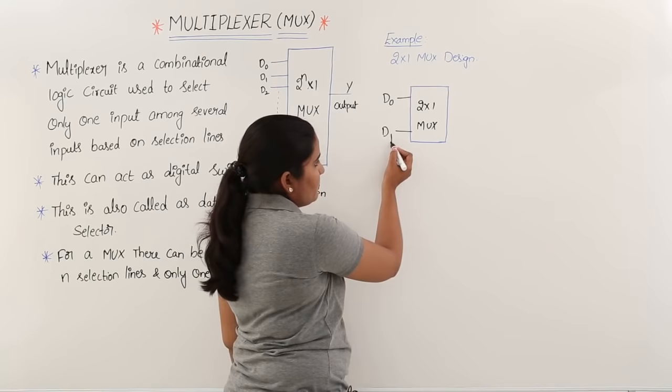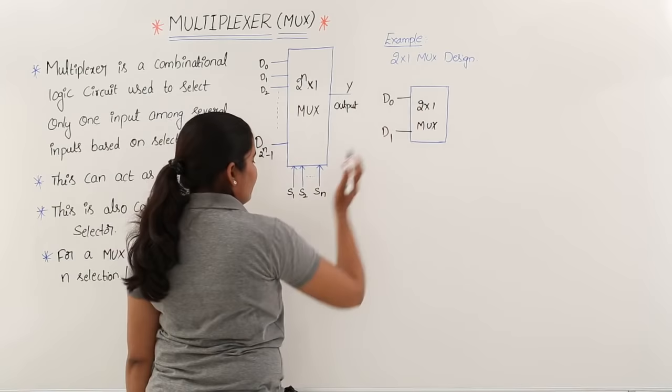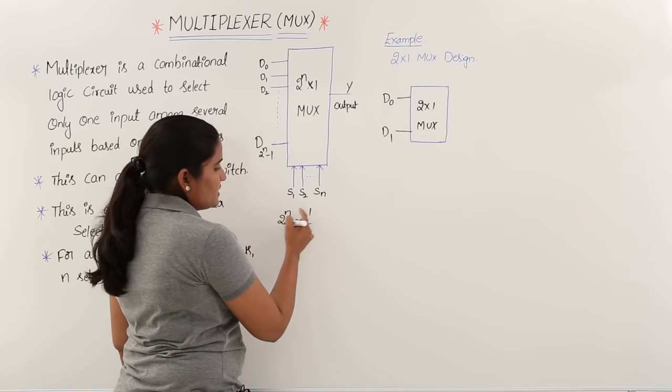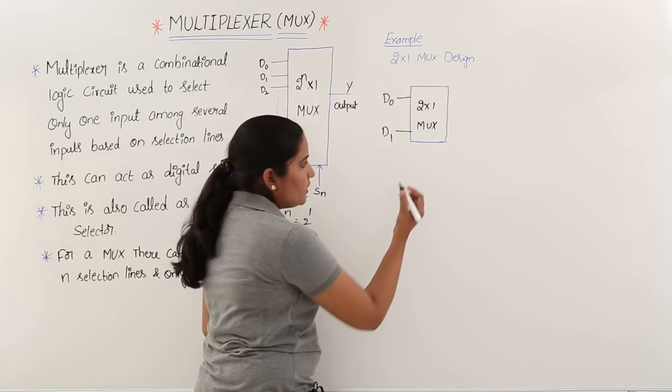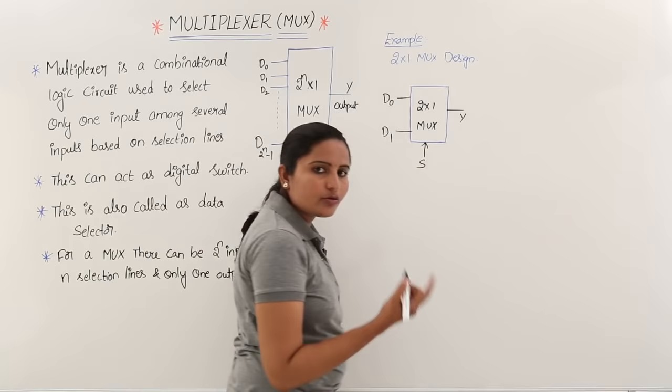For the 2:1 MUX, comparing with the standard MUX structure where 2-power-n equals 2, n equals 1. So the number of selection lines is 1 — only one selection line S. There is only one output Y in all MUX configurations.